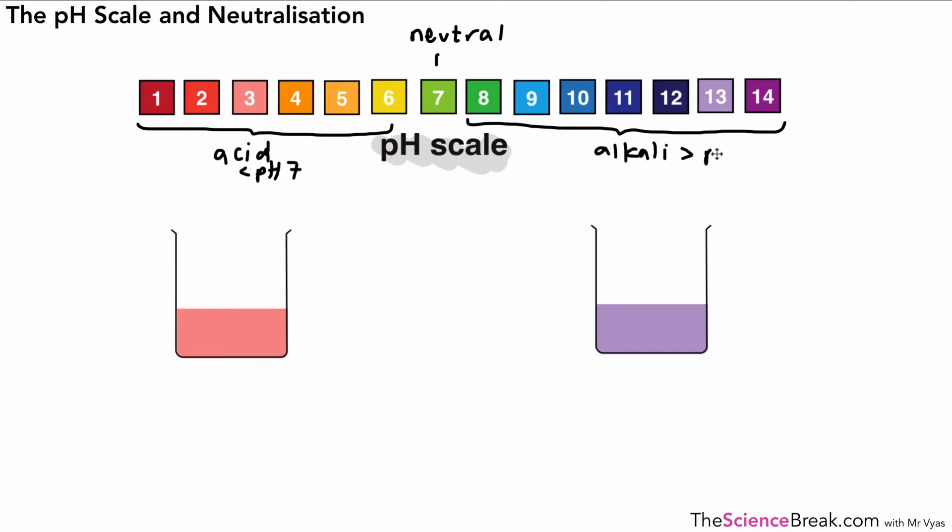At the far end of each of the pH scale we have the strongest alkali and the strongest acid. pH 14 is the strongest alkali and pH 1 is the strongest acid. So neutral in the middle, and stronger as you go further away from neutral whether it's acid or alkali.